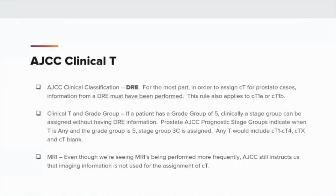If a patient has a grade group 5, clinically a stage group can be assigned without having DRE information. Prostate AJCC prognostic stage groups indicate when T is any and the grade group is 5, grade group 3C is assigned. Any T would include Clinical T1 through Clinical T4, Clinical TX, and Clinical T blank. Imaging results or biopsy laterality are not to be used to assign a Clinical T. Even though we're seeing MRIs being performed more frequently, AJCC still instructs us that imaging information is not used for the assignment of Clinical T.